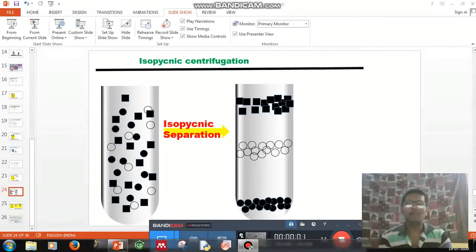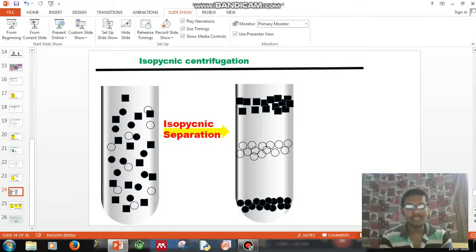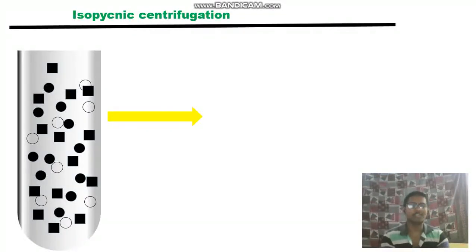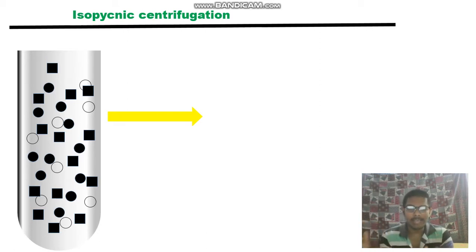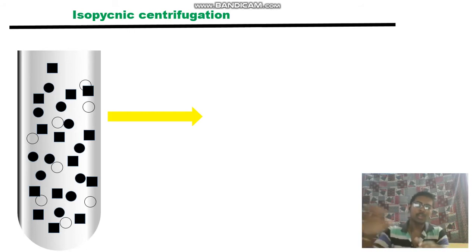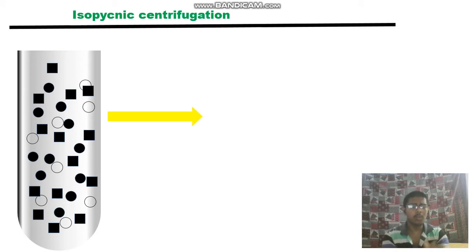One part of density gradient centrifugation is rate-zonal centrifugation, and the next part is isopycnic centrifugation. There are two different types of density gradient centrifugation: rate-zonal centrifugation and isopycnic centrifugation. Both depend upon the formation of a density gradient in a solution, upon which the sample is going to move.